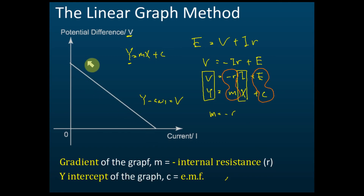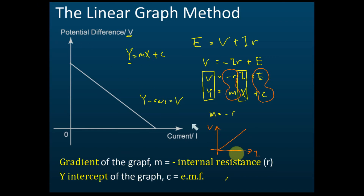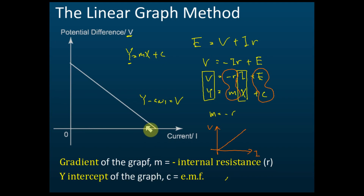Some students have learned from Ohm's law that current is directly proportional to potential difference, giving a straight line going upward. But this graph goes downward. Some students think this is a mistake and ignore the question entirely, waiting for free marks — don't do that!